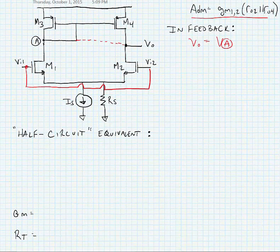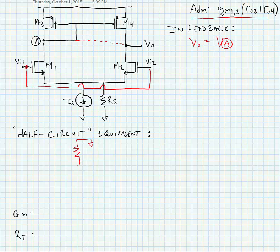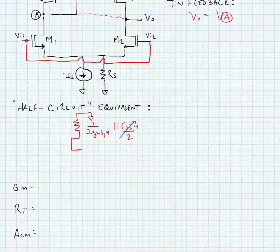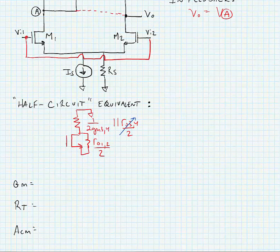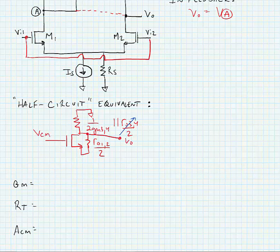If we make all these connections we find that the transistors are now connected in parallel, so we can make an equivalent circuit. M3 and M4 are diode-connected transistors and they're in parallel, so we have 1 over 2GM34, in parallel with RO34 over 2, but this term is negligible because it's much larger than 1 over GM. We have M1 and M2 with output resistance RO12 over 2, and we're taking our output off of the drain node.